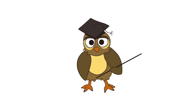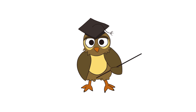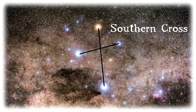Fortunately this is not a problem, as there are a number of ways to find the southern celestial pole requiring just a little bit of imagination. The easiest of these involves the Southern Cross and two other stars located to the left-hand side of it, known as the pointers.